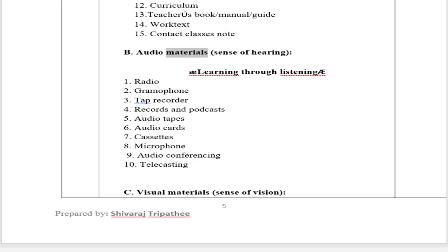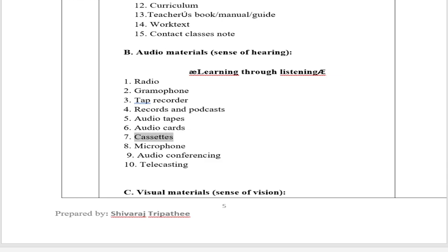B. Audio Materials (sense of hearing) — E-learning through listening guide. Types include: 1. Radio, 2. Gramophone, 3. Tape recorder, 4. Records and podcasts, 5. Audio tapes, 6. Audio cards, 7. Cassettes, 8. Microphone, 9. Audio conferencing, 10. Telecasting.